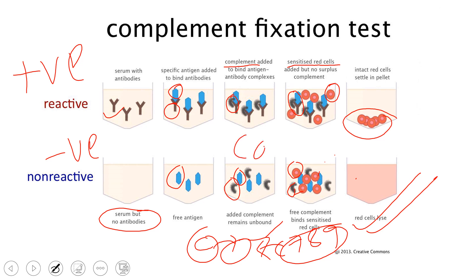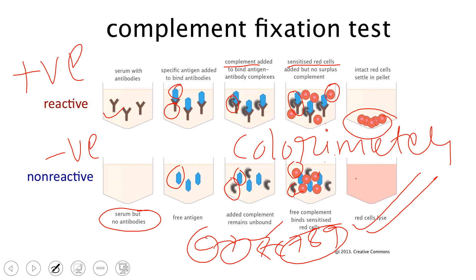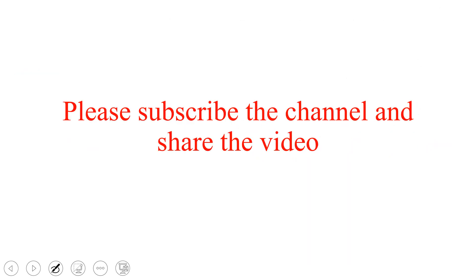The colorimeter measures the intensity of the color to determine whether the result is negative or positive. Thank you for watching. If you liked this video, please subscribe to the channel.